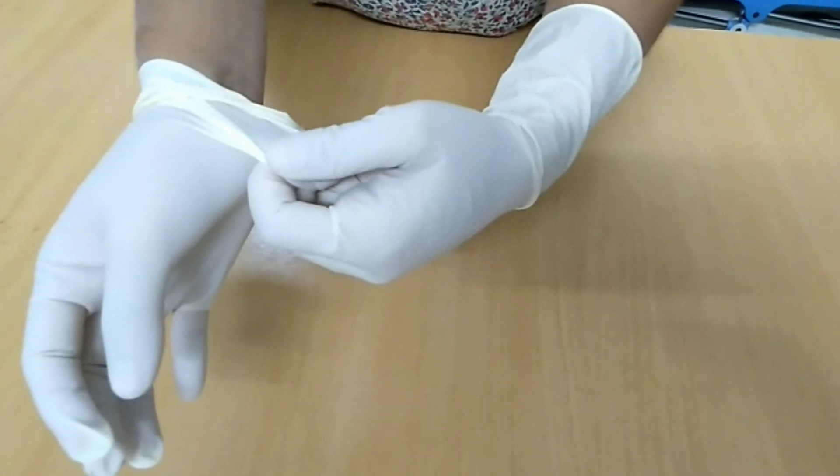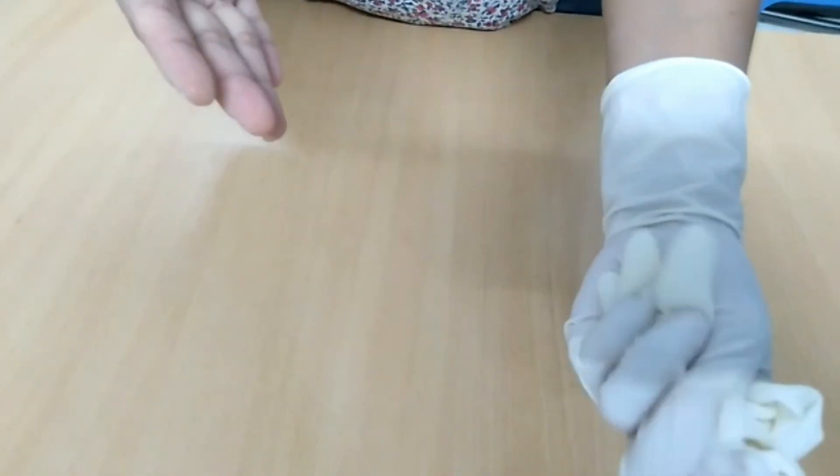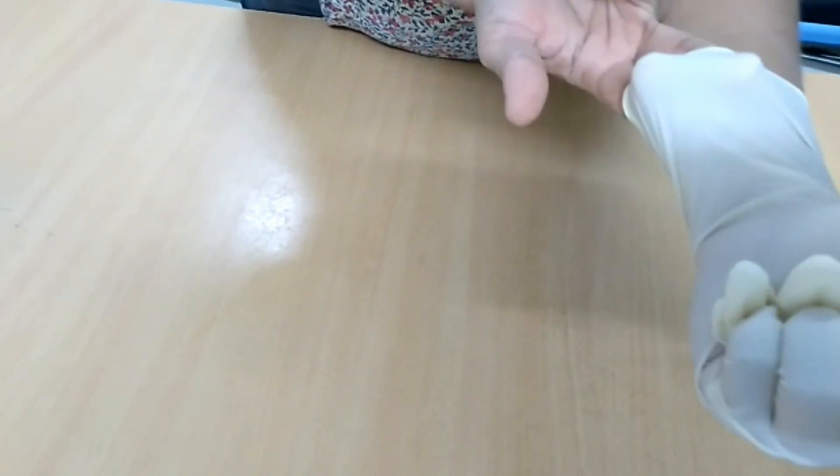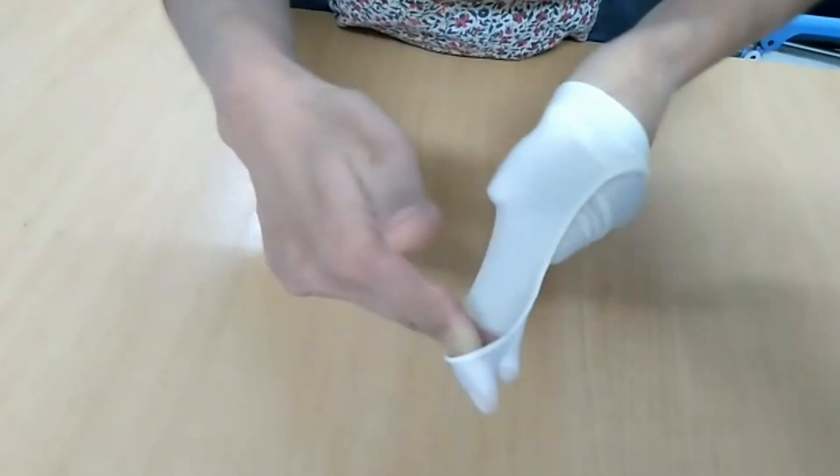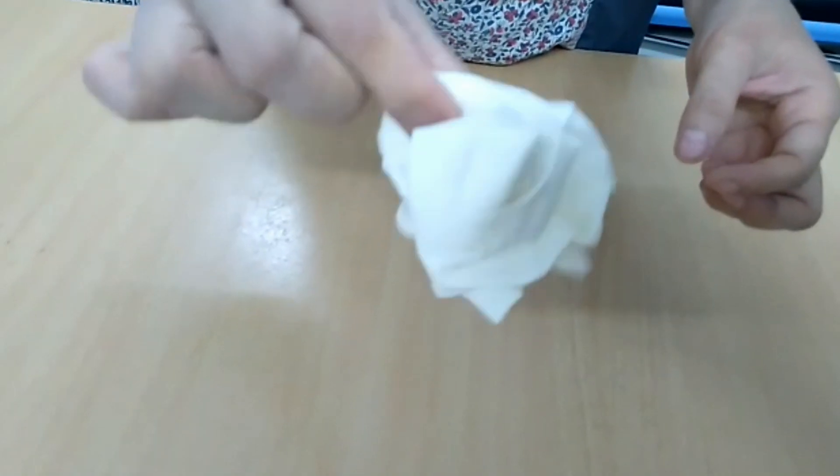Grab from the outer part and just pull it this way. You can hold it on the palm. Now to remove the other hand, just pull it from the inner part and then you can just touch the inner part and throw it.